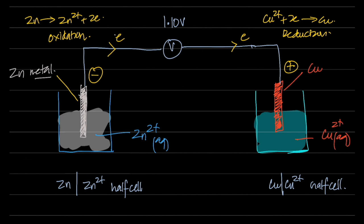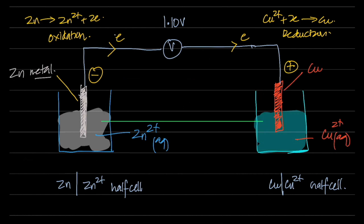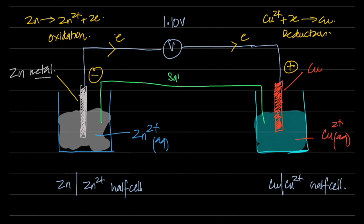There is one more component needed to complete the cell: a salt bridge. Without it, there is no circuit completion. For now, just know that it exists — it will be discussed in more detail later. With the salt bridge, the full electrochemical cell is complete, and the two half cells produce an overall potential difference.